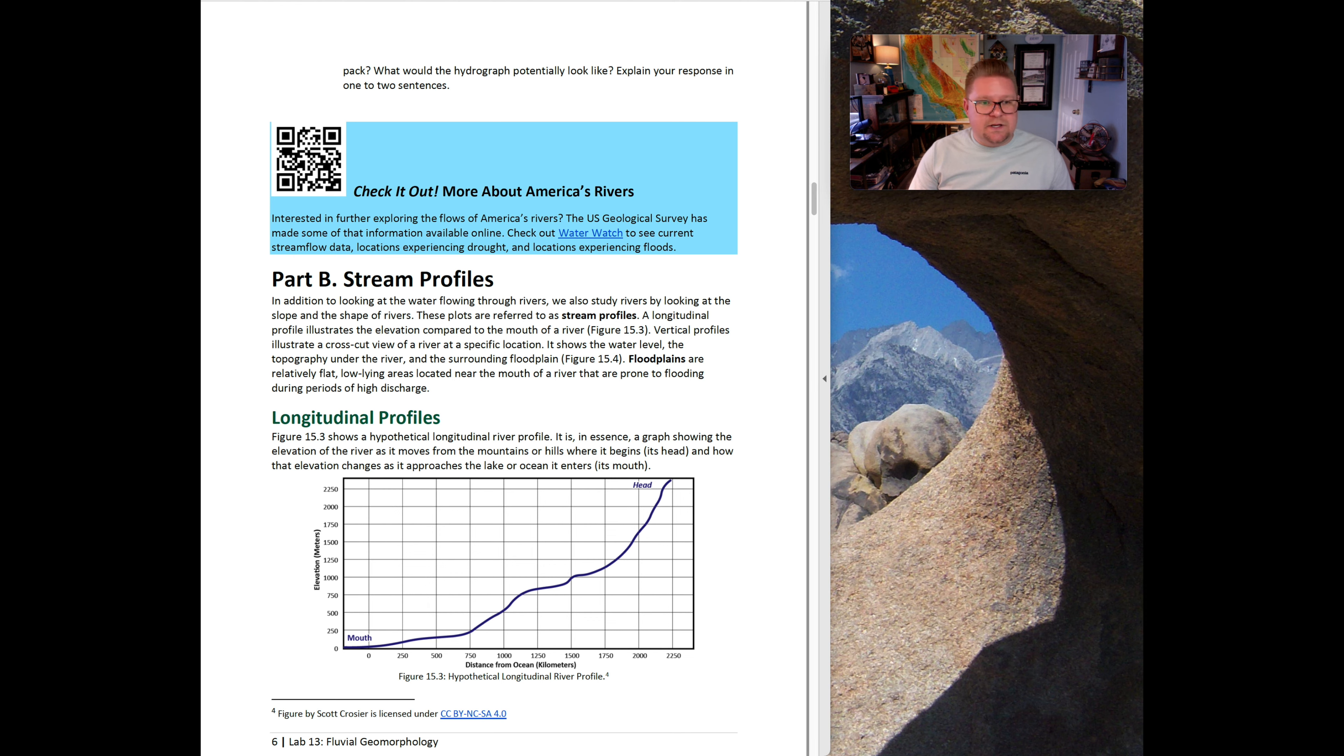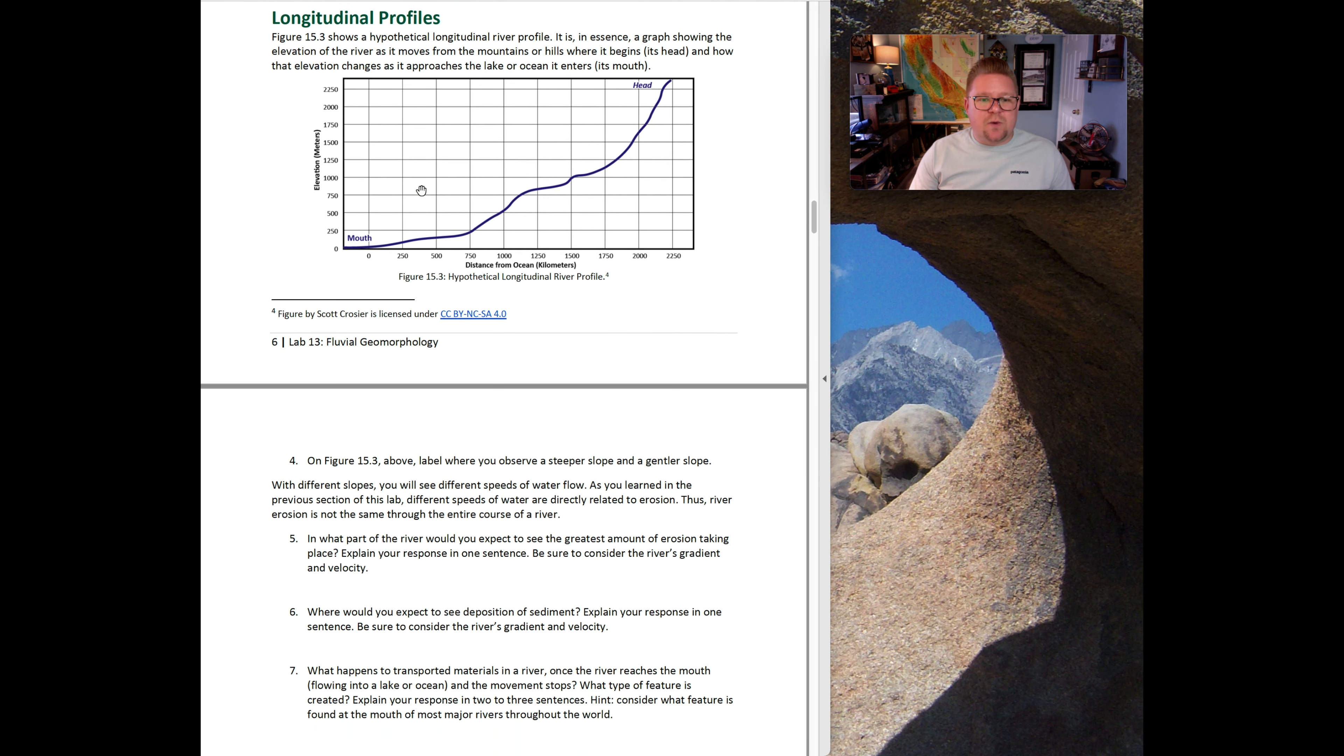Question four says on that figure above, label where you observe the steeper slope and the gentler slope. Which side, the left or the right, has a steeper slope versus a gentler or less steep slope? The bottom shows the distance from the ocean in kilometers and going up and down we can see the elevation in meters. With different slopes, you will see different speeds of water flow. As we learned in the previous section, different speeds of water are directly related to erosion. Thus, river erosion is not the same through the entire course of a river itself.